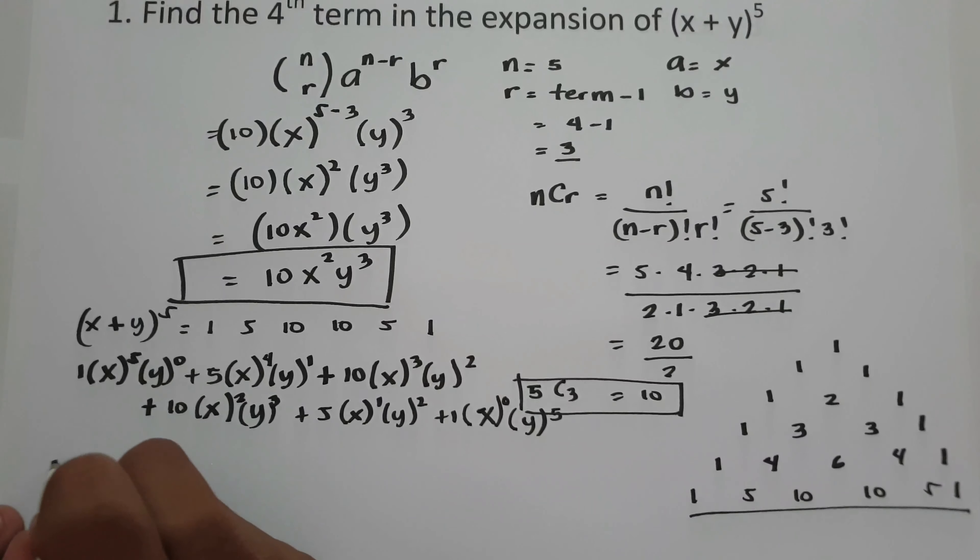So 6 factorial is 6 times 5 times 4 times 3 times 2 times 1, over 4 factorial which is 4 times 3 times 2 times 1, times 2 factorial which is 2 times 1. Canceling, we have 6 times 5 equals 30, over 2 times 1 equals 2. So the value of n taken r is 30 divided by 2, which is 15. So we have 15 times 2x raised to 6 minus 2 which is 4, times negative 4y raised to 2. Negative 4 raised to 2 is 16, so we get 15 times 2x raised to 4 times 16y squared.